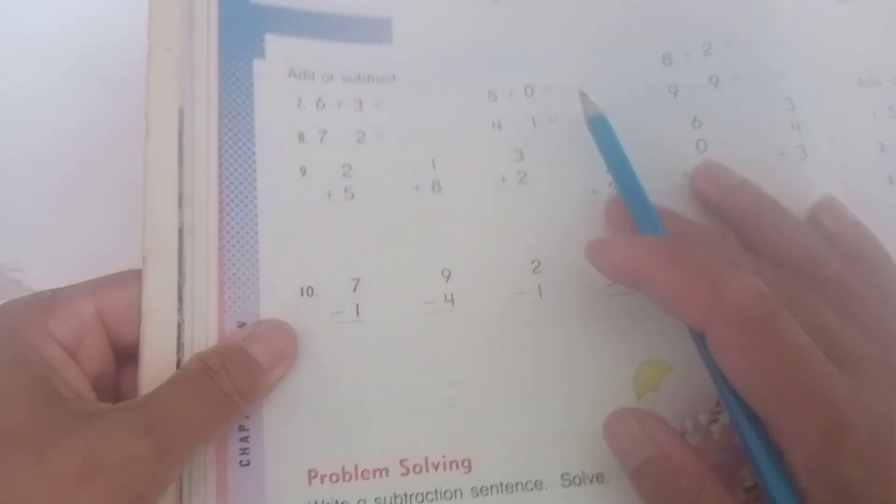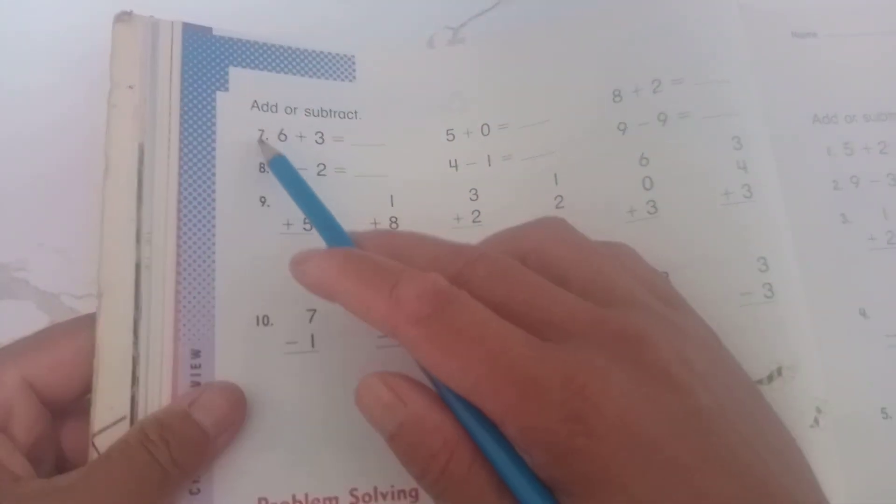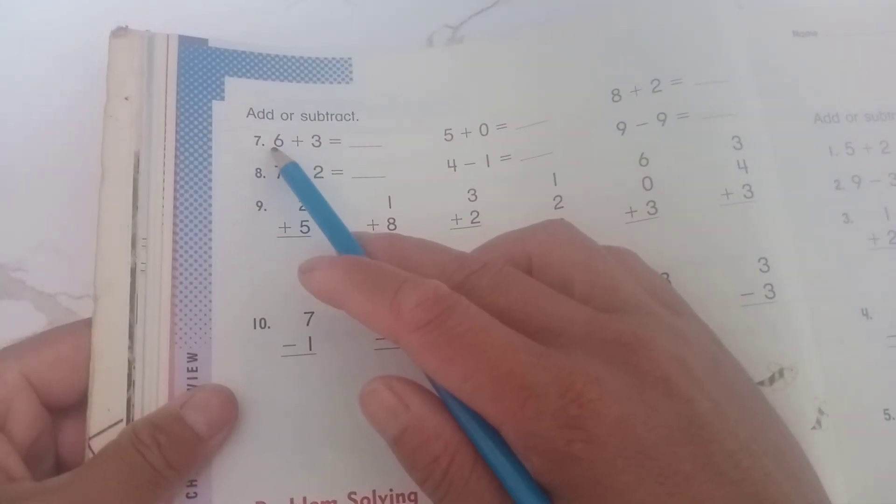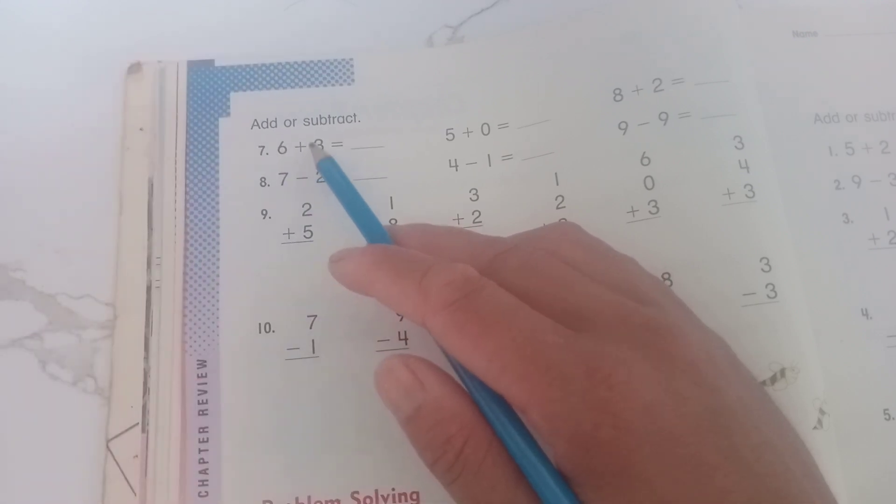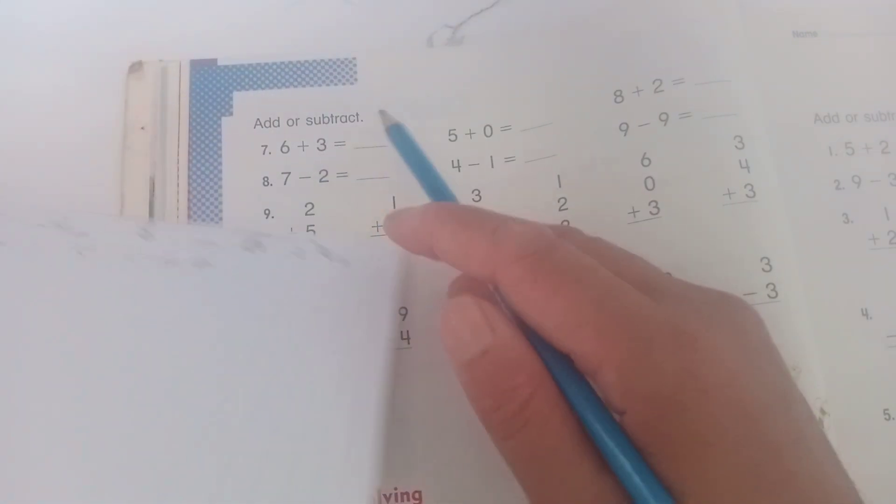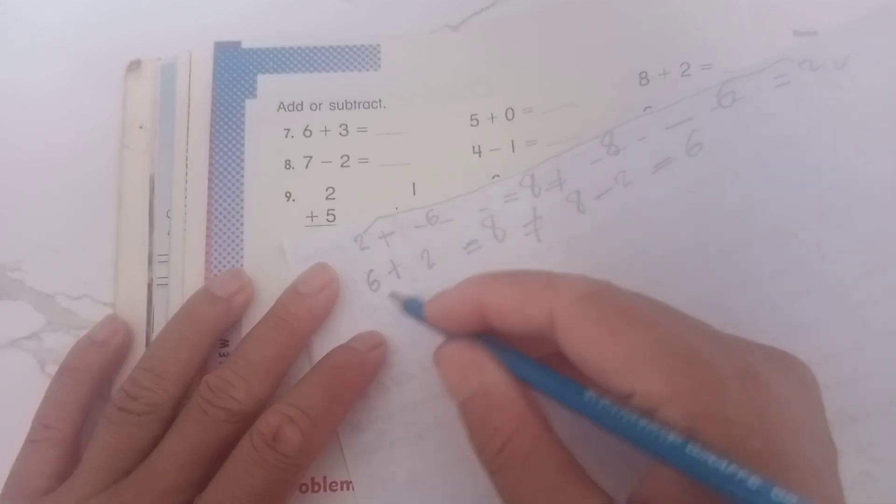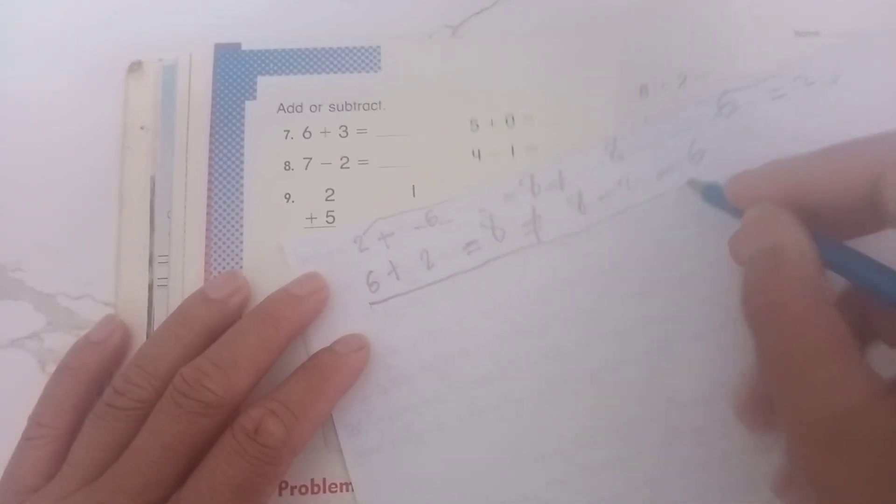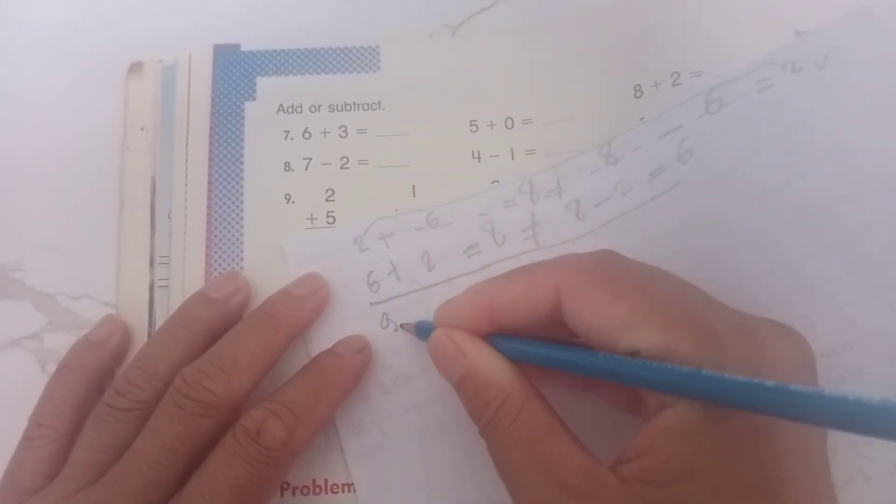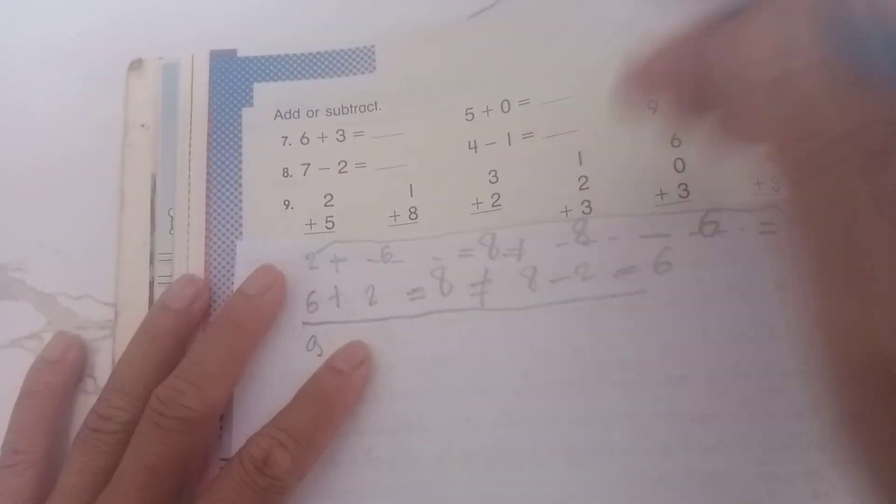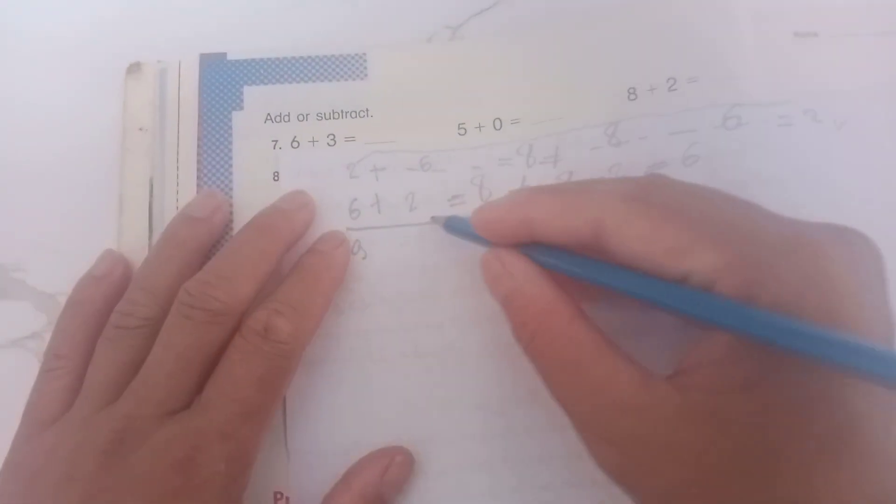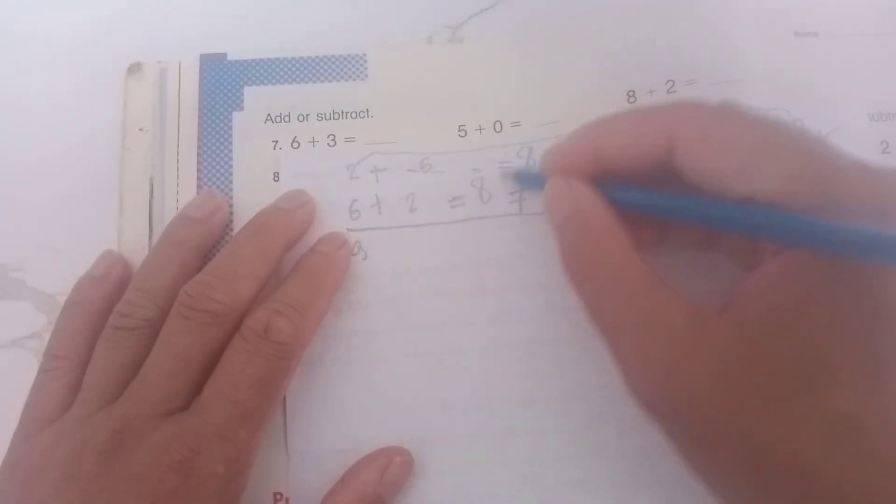Add or subtract, you can see. Number seven and six plus three equals nine. Six plus three equals nine. And this is five plus zero equals five.